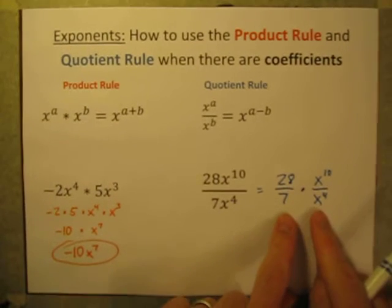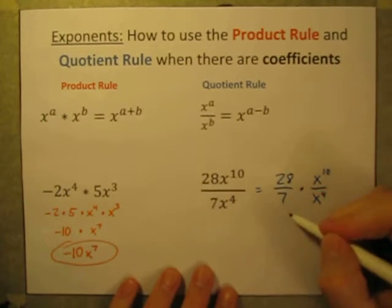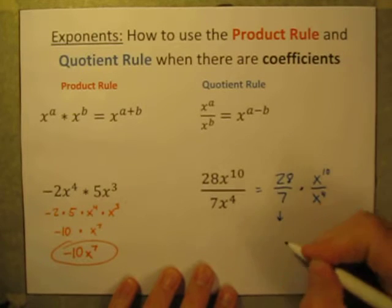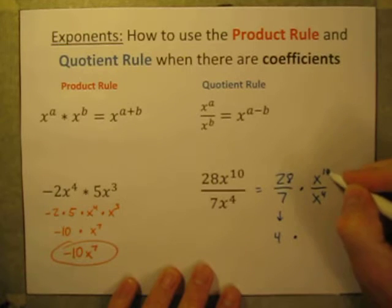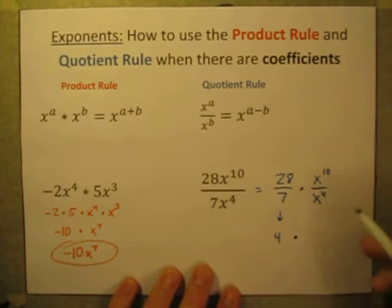And now we can do those two pieces separately. 28 divided by 7, of course, is just 4.